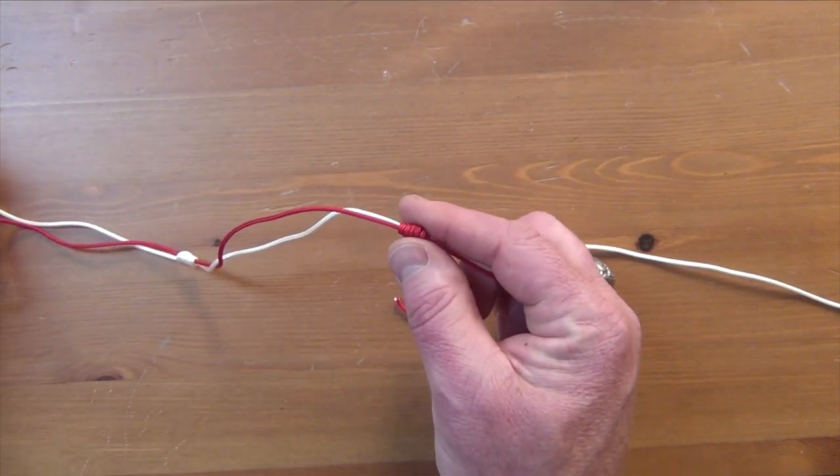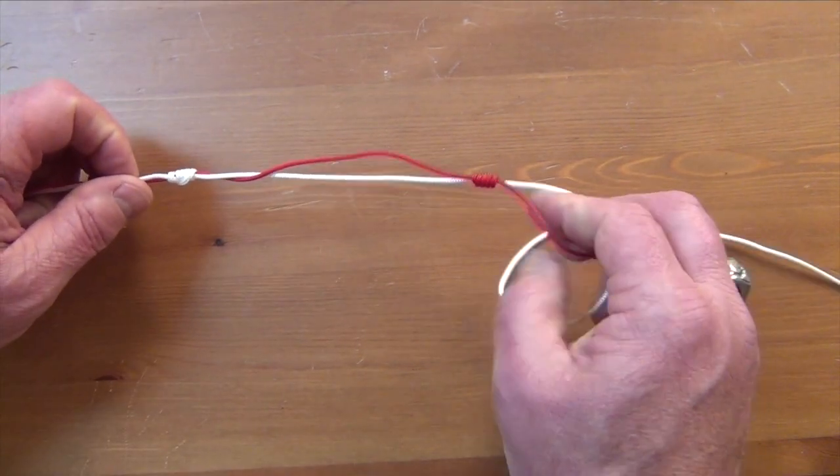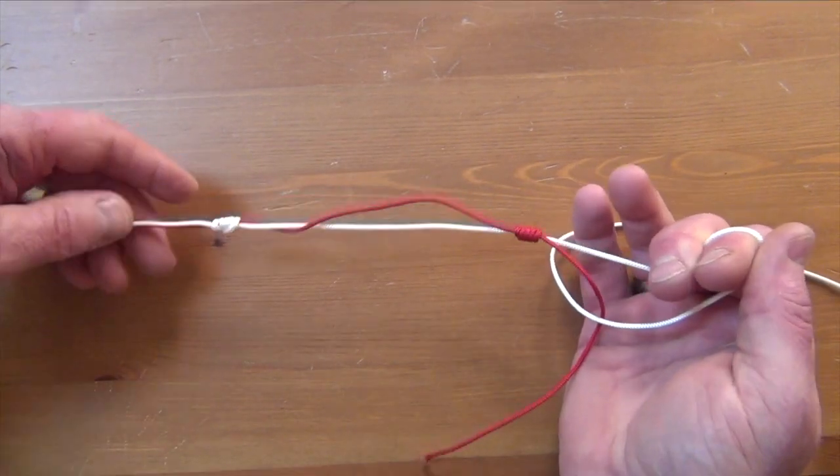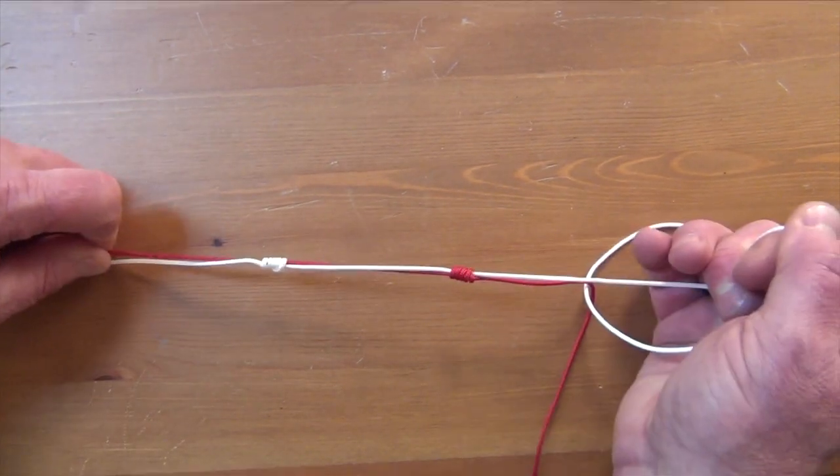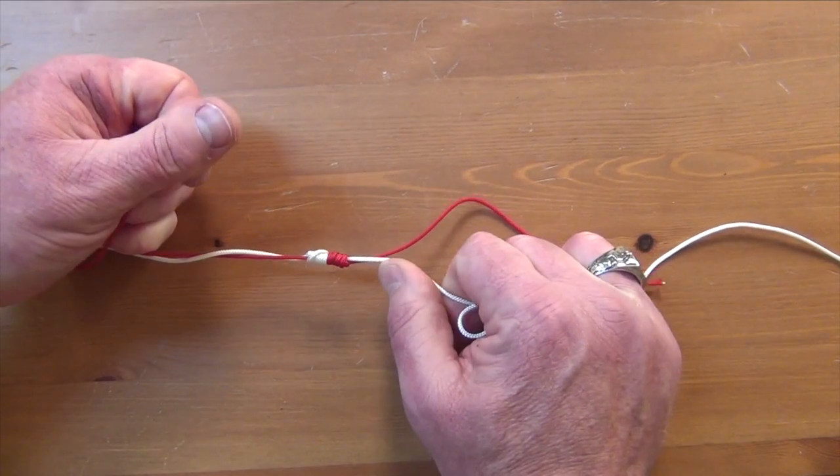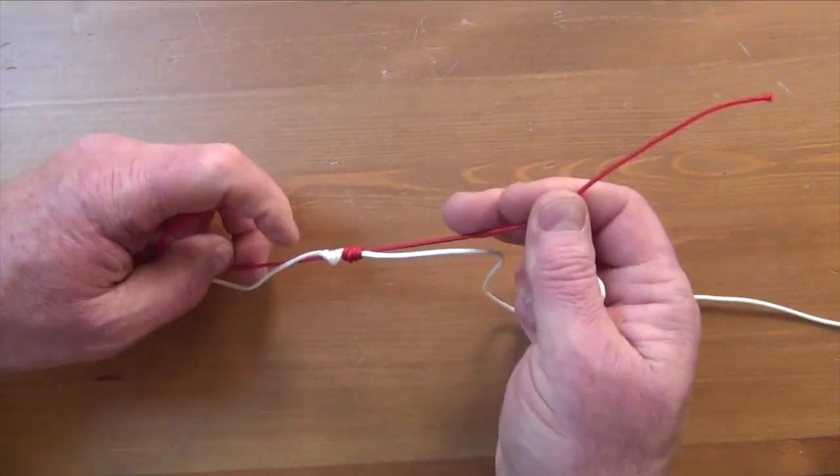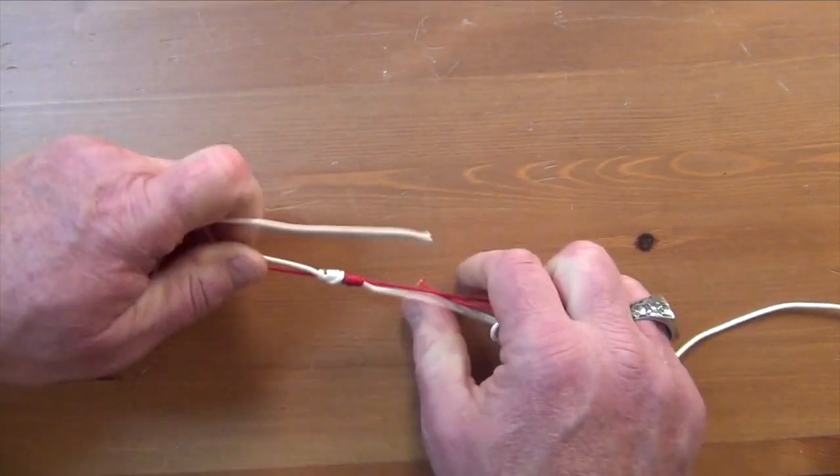Uni, here's our fluorocarbon uni. Now we're going to take our fluorocarbon leader and we're going to take the main line, the braid of the main line, and we're going to start pulling together. And as they come together now we can cinch. And then grab the tag ends and cinch it. Give it a cinch there and give it a cinch on the leader and the main line.